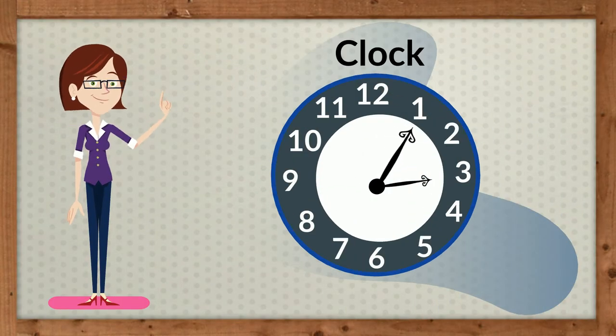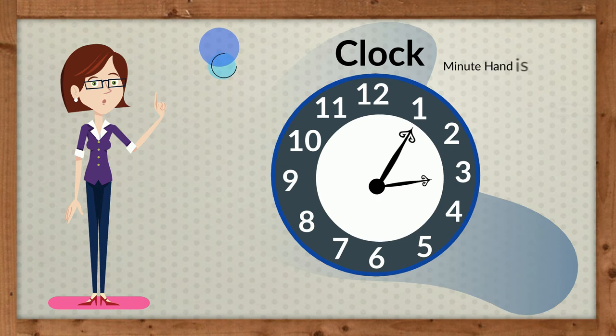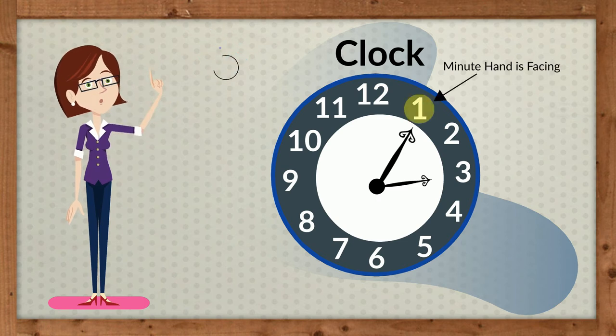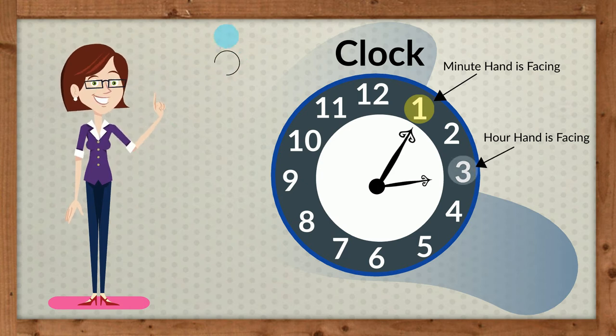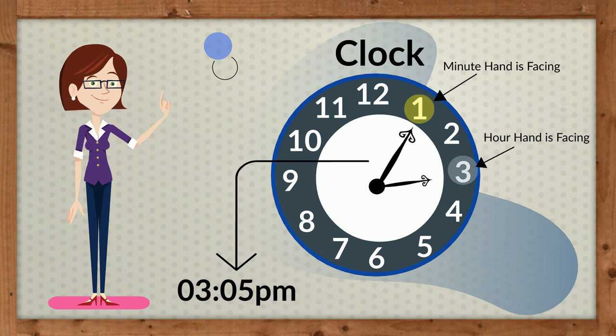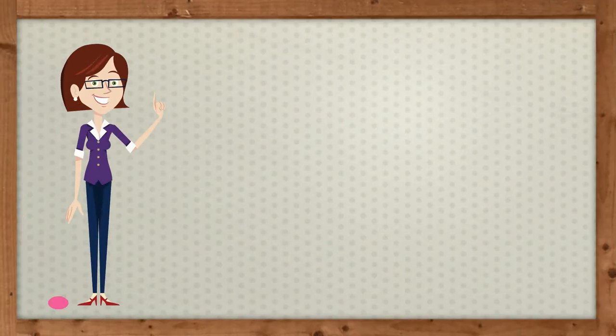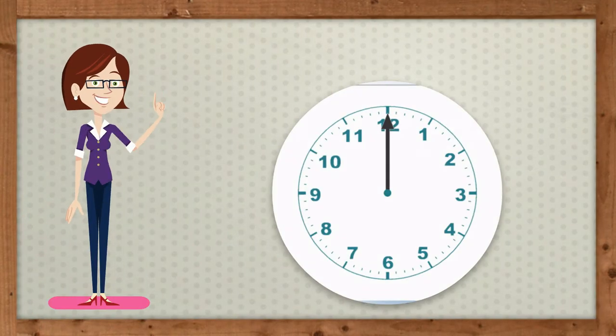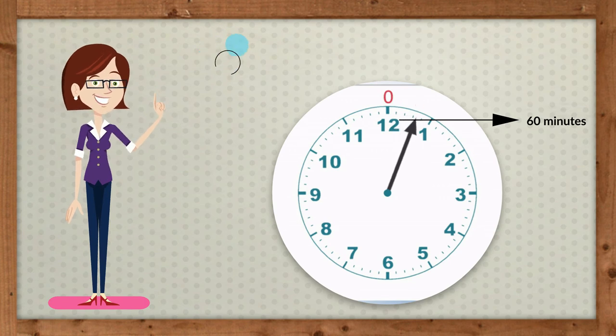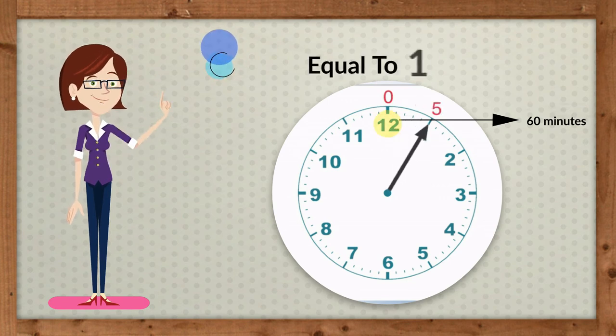However, on this clock the minute hand is facing 1 and the hour hand is facing 3, so we read it as 5 minutes after 3 o'clock. The minute hand completes circling the clock in 60 minutes, which is equal to 1 hour.